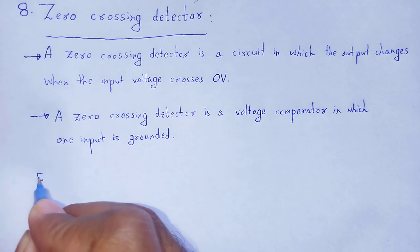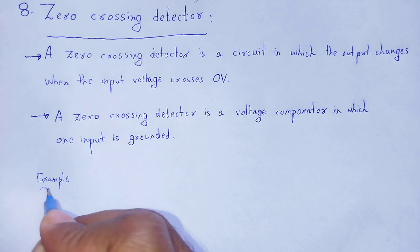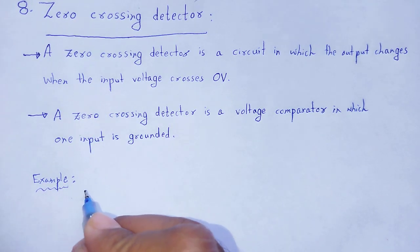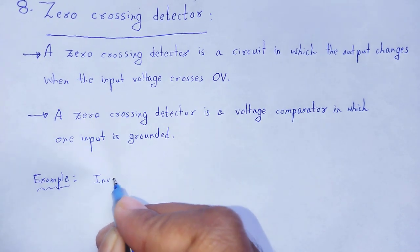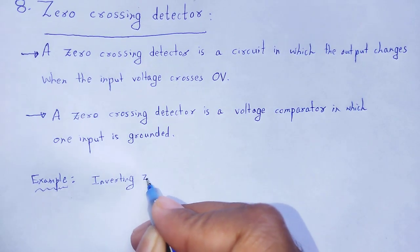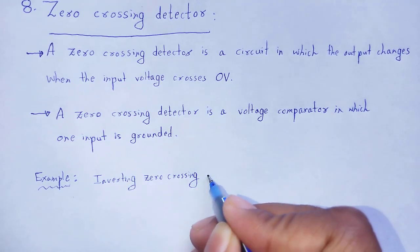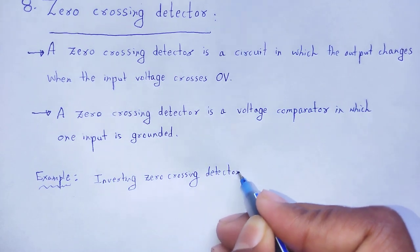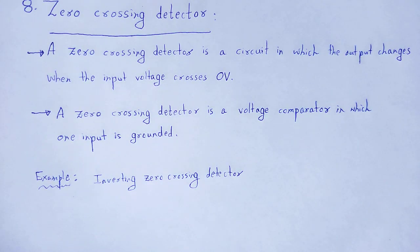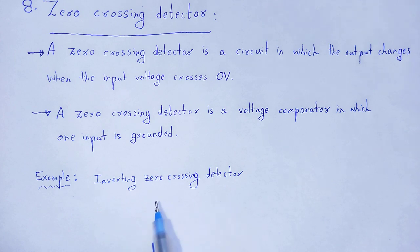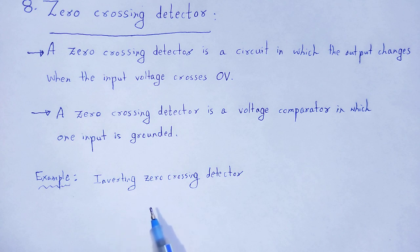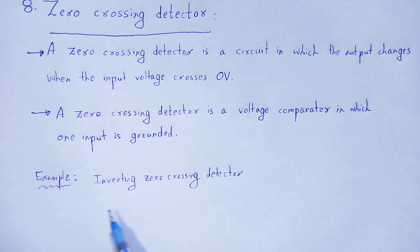As an example, we will discuss an inverting zero crossing detector. As you know, the op-amp has two terminals — one is inverting and another one is non-inverting. If we provide the signal across the inverting terminal, that circuit used to detect zero crossing is called an inverting zero crossing detector. If we provide the signal across the non-inverting terminal, it is called a non-inverting zero crossing detector. For our example, we prefer the inverting zero crossing detector.